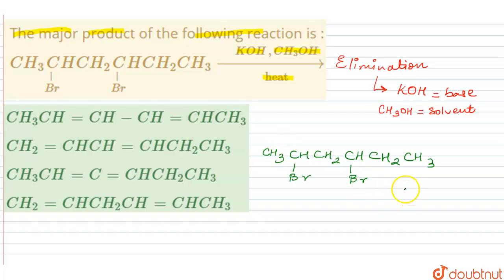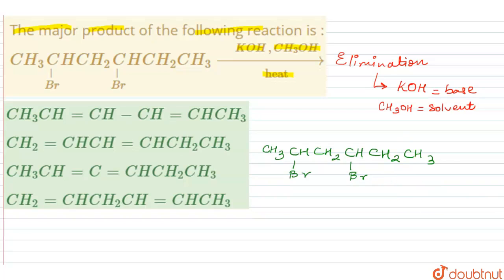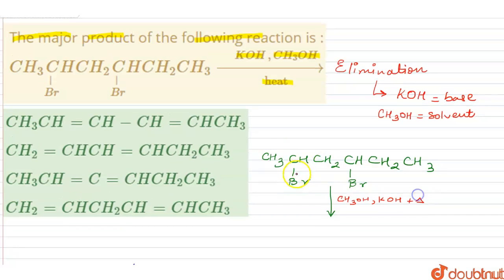Elimination mechanism would be taking place at both the locations. Now let us predict what could be the possible products from this particular reaction. In presence of our alcoholic KOH, that is CH3OH KOH, an E2 mechanism will be in operation.